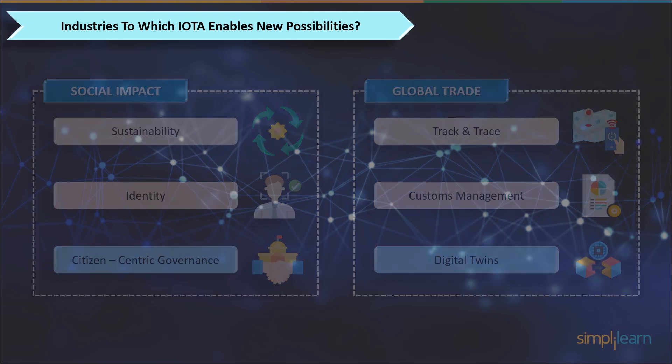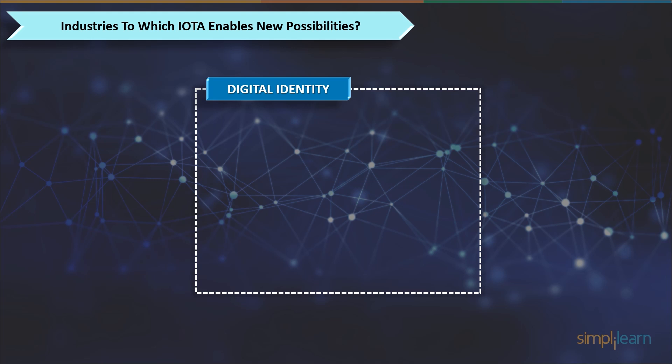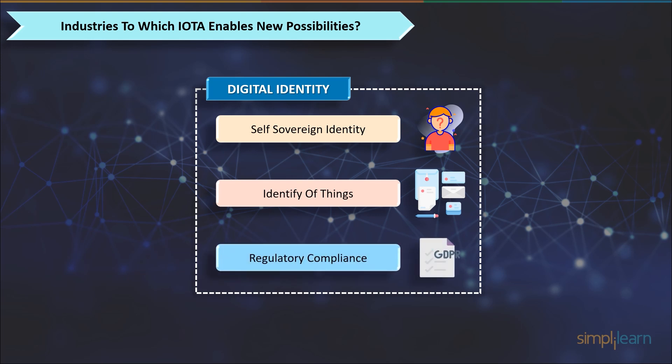And the third one is unifying digital identity. IOTA aims to provide trust between individuals, organizations, and things. It focuses on self-sovereign identity — a borderless digital identity that anyone can verify — the identity of things, giving identities to devices to allow them to prove their authenticity and specifications, and regulatory compliance through digital identities that meet data privacy regulations like GDPR.